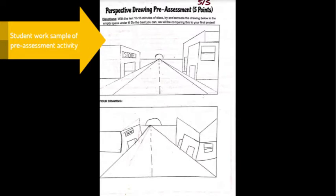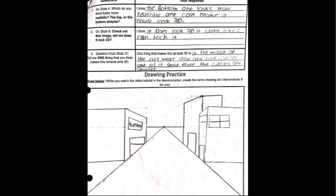This is an example of one pre-assessment that a student did before they left class. As you can see, their lines are not going anywhere and there is no use of a vanishing point. When this is compared to the assignment they did at home with the flipped classroom, it's clear that the students were able to understand how a vanishing point works a little more clearly.